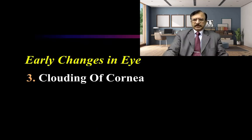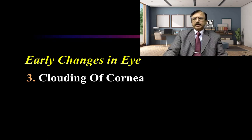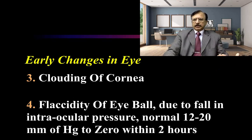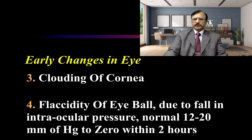There is also cloudiness of the cornea when the eyes remain open for some time after death. Then the eyeballs become softened, meaning there is a fall in the intraocular pressure. Normally in living persons it is 12 to 20 millimeters of mercury, but within two hours this intraocular pressure falls to zero.